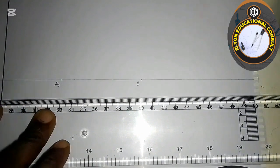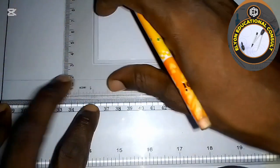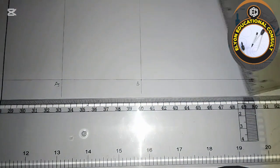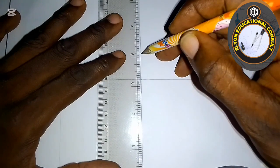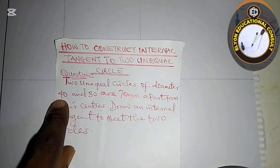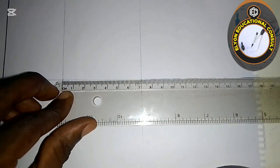Now I'll draw perpendiculars from points A and B. For the first circle, the diameter is 40, so the radius is 20. I measure 20 mm from A to mark a point for the circle.